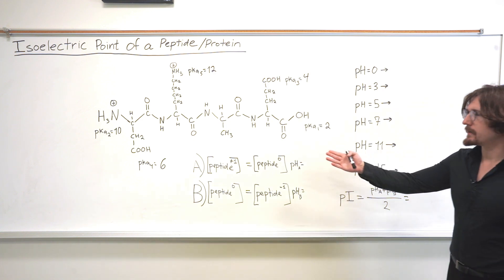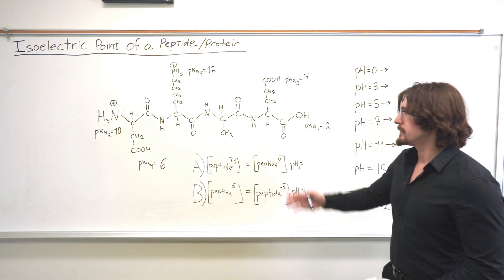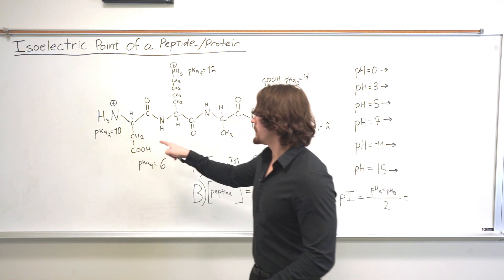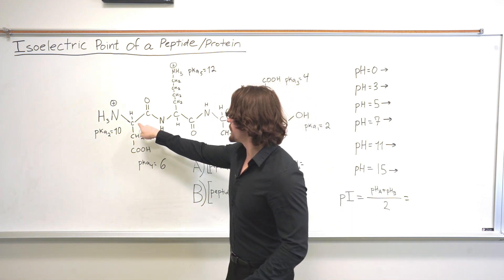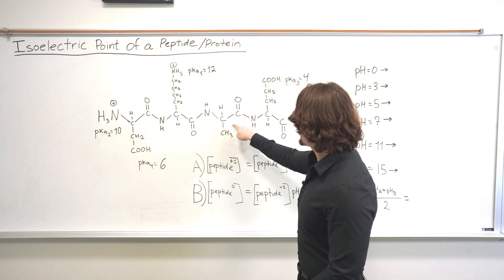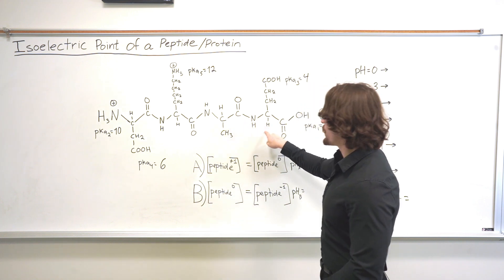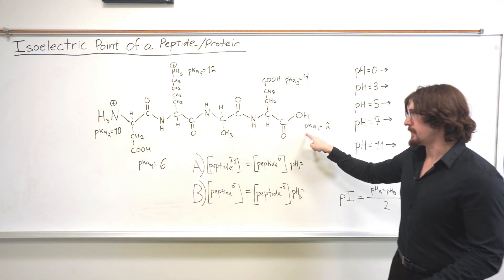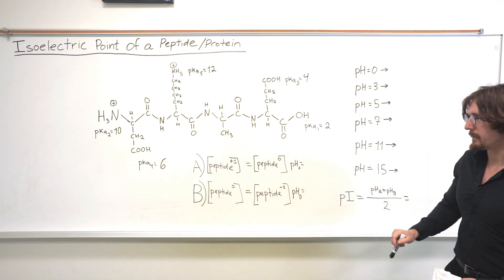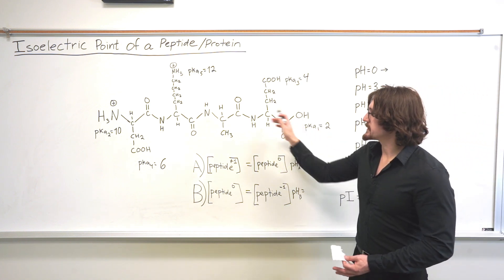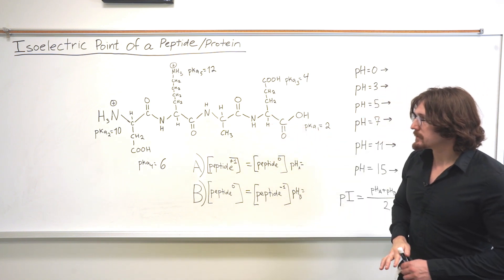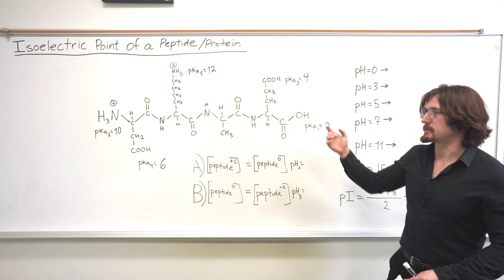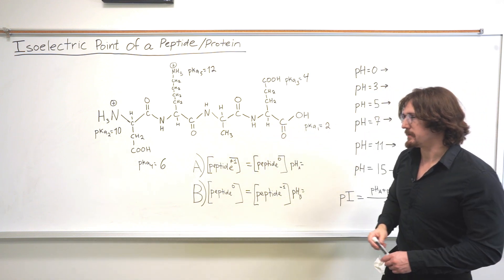Here we have this peptide — it's a tetrapeptide, so there are four amino acids. You can count the alpha carbons: one, two, three, and four. It has its amino end and its carboxyl end — the amino and carboxyl terminals — and some side chains. To begin, let's identify what amino acids are composing this whole peptide.